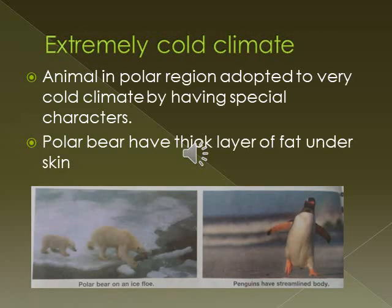Extremely cold climate. Animals in polar regions are adapted to very cold climates by having special characteristics to minimize heat loss. Polar bears have a thick layer of fat under the skin and small ears to minimize heat loss. Thick fur helps keep them warm, while large paws help in swimming and walking on snow. Penguins have a thick layer of skin and huddle together on the ground to keep warm. Their streamlined body and webbed feet make them swift swimmers.